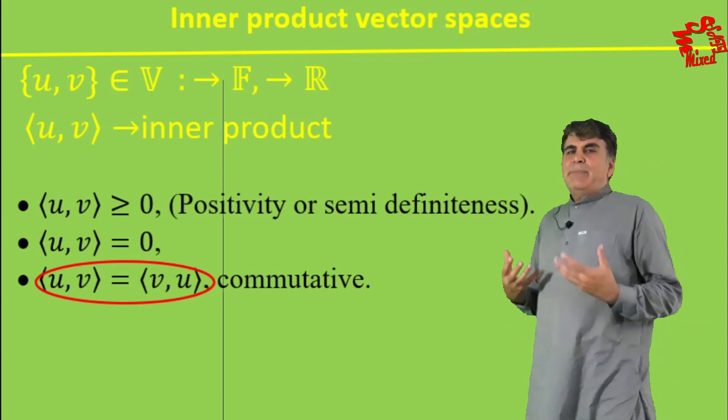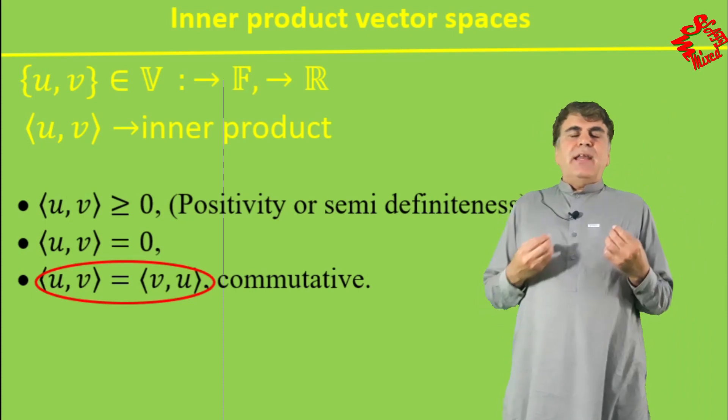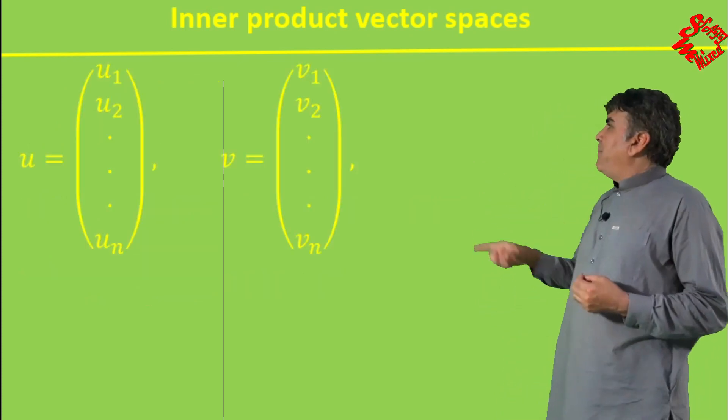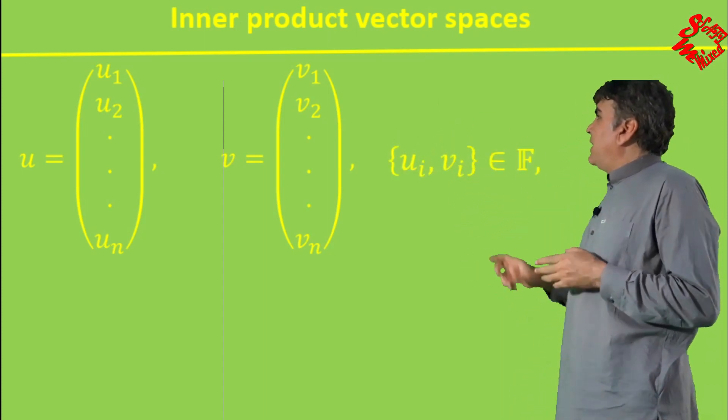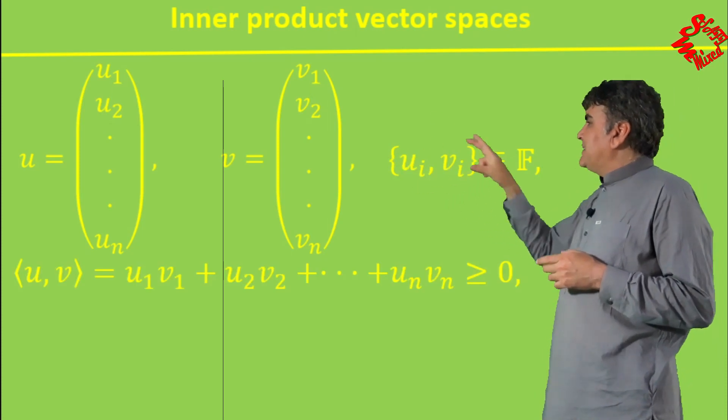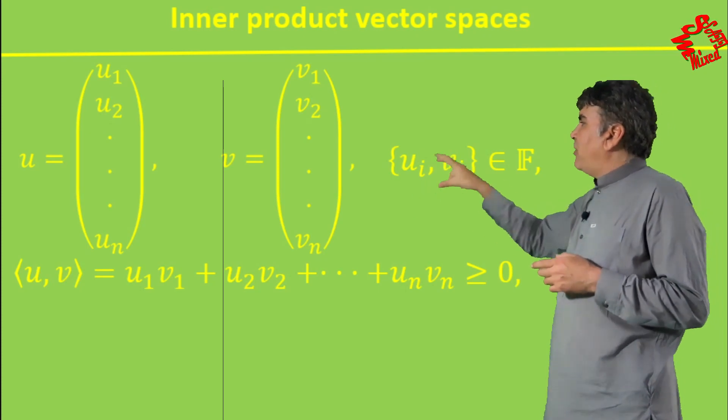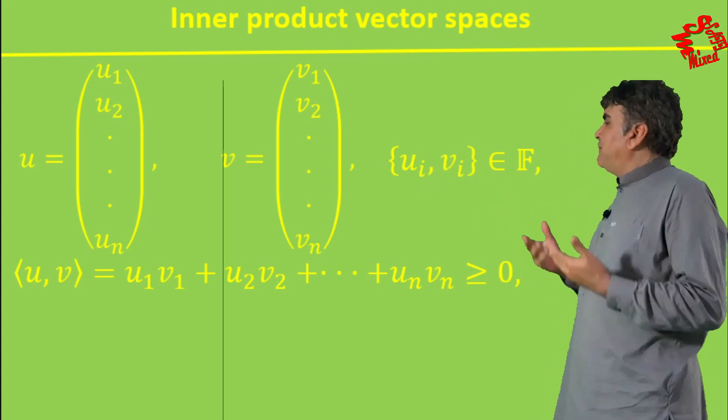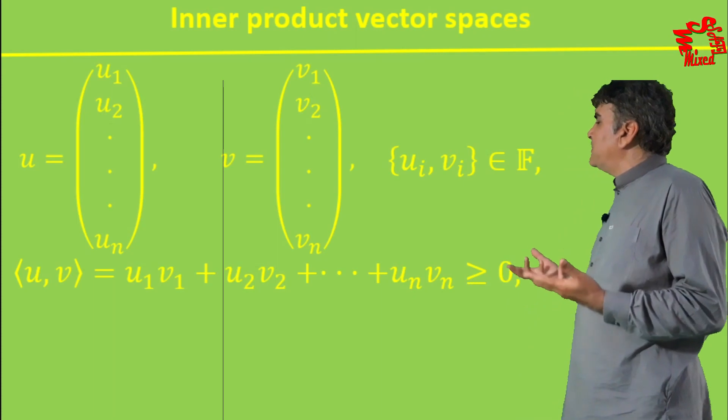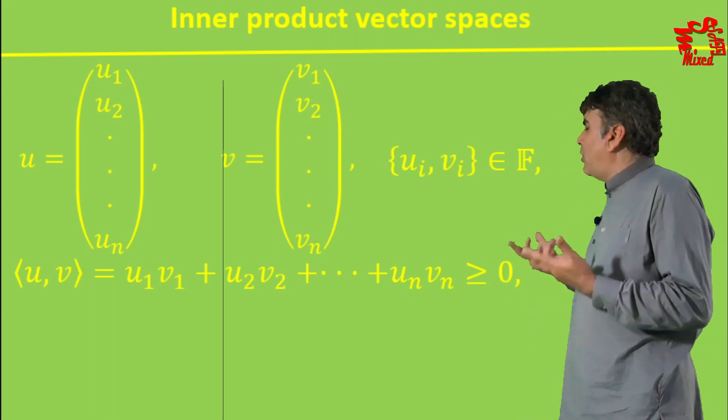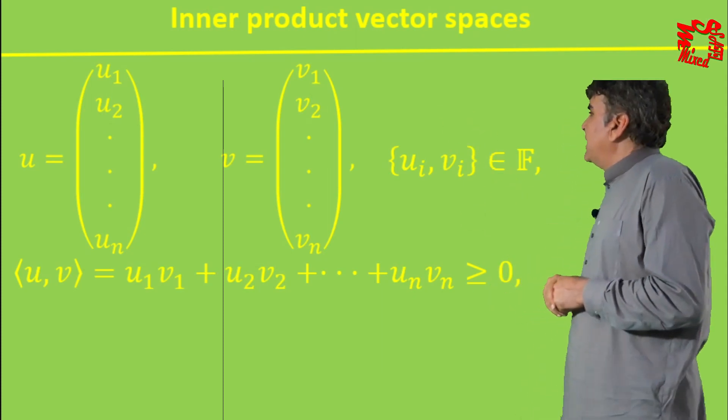To catch the idea behind this concept more deeply, let me explain it through an example. Let the elements U and V be n-row column matrices in the form of this and this. Then the inner product on these two elements is defined as the sum of the products of the corresponding elements. And since Ui, Vi are the elements over the space of real numbers, therefore the sum of their products is always greater or equal to zero, which specifies the first property of inner product.